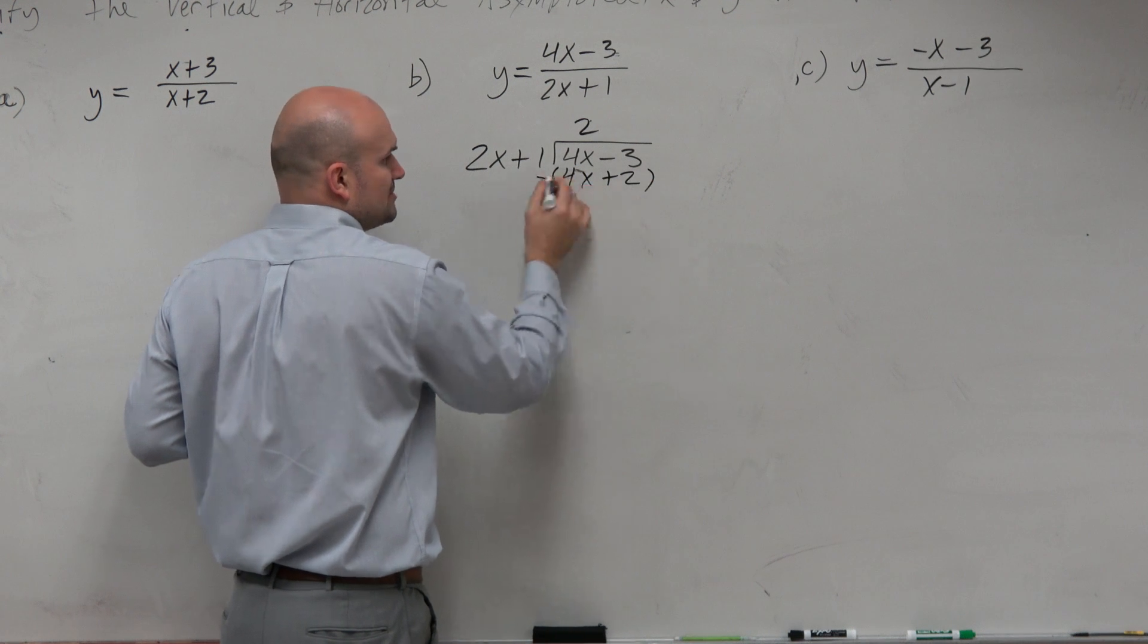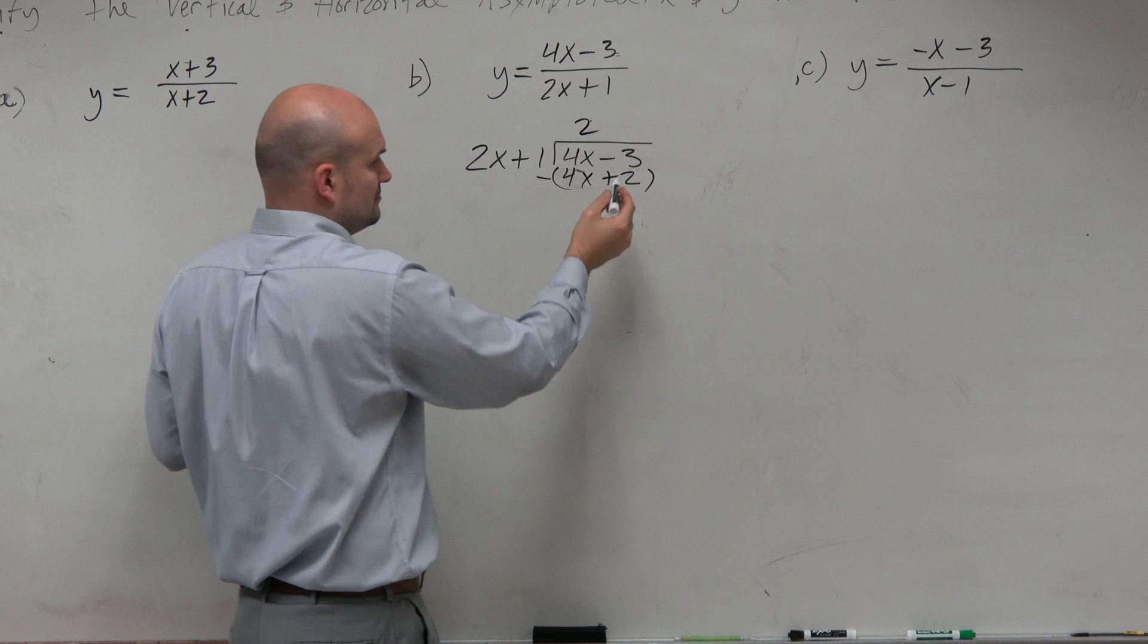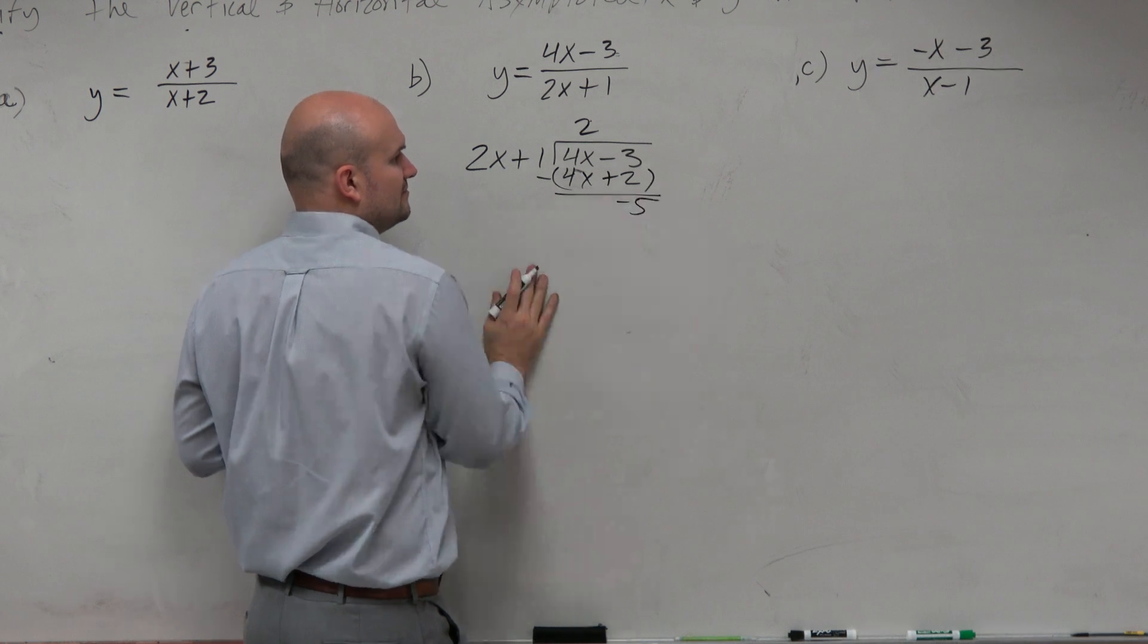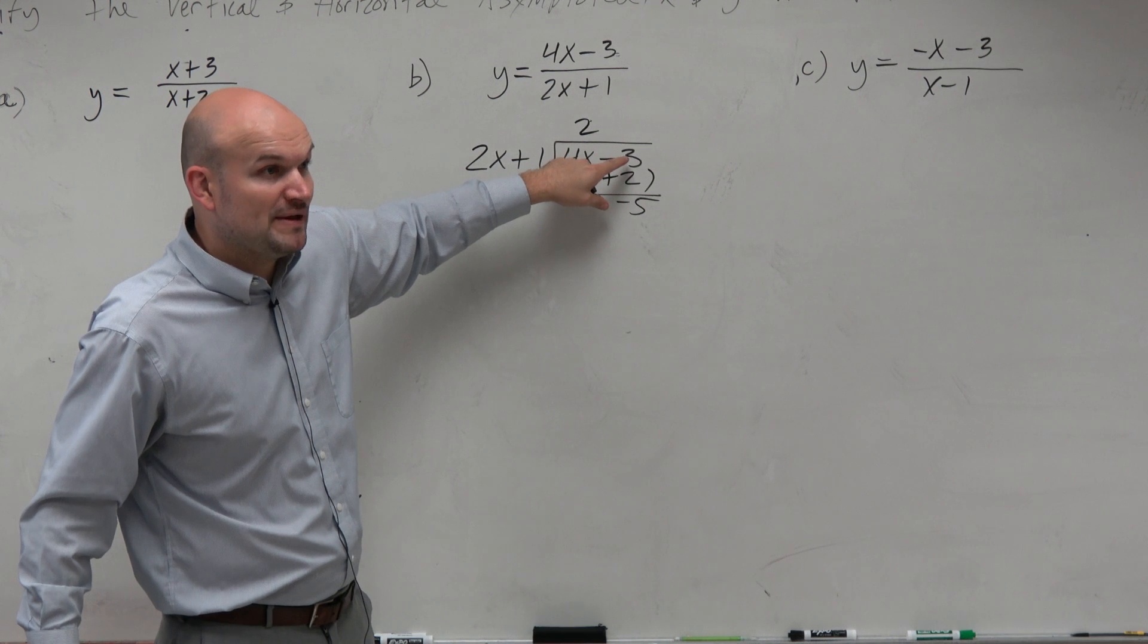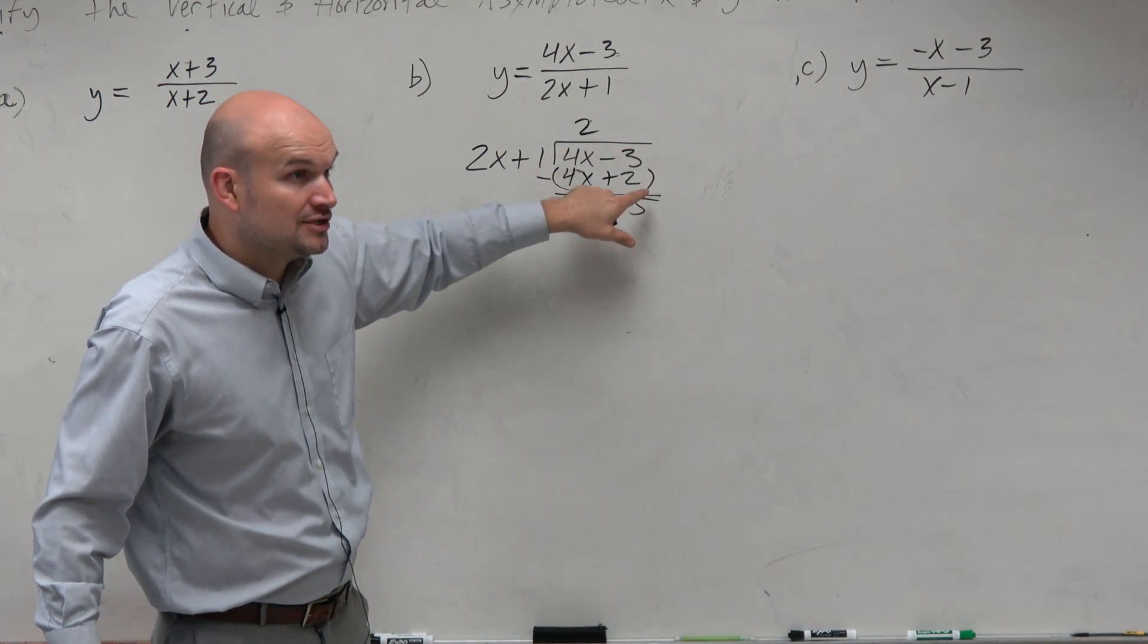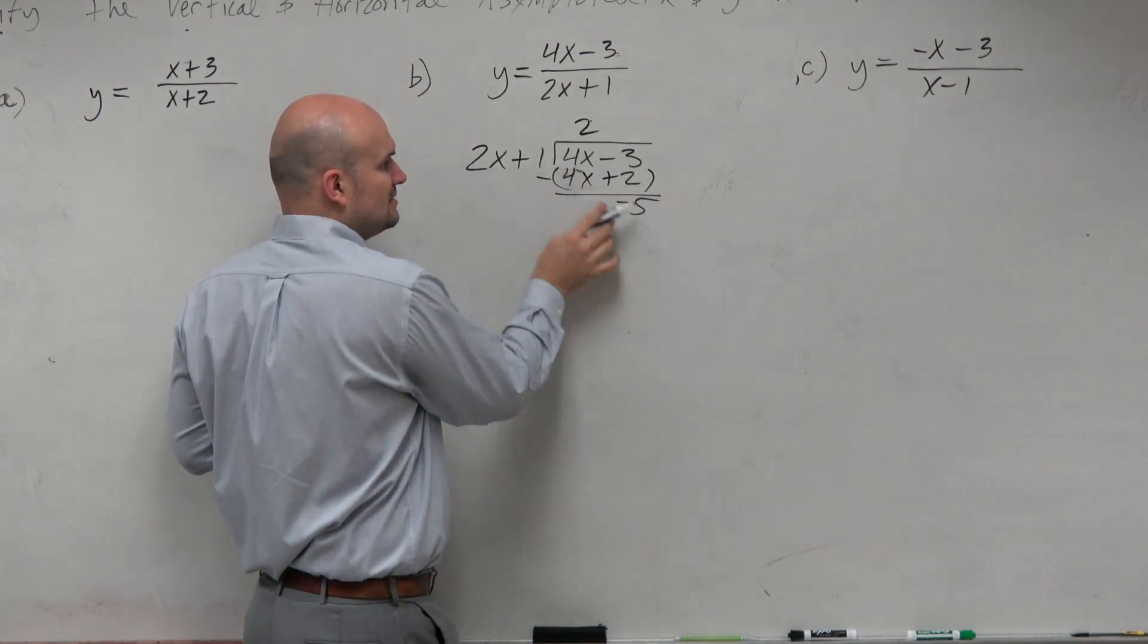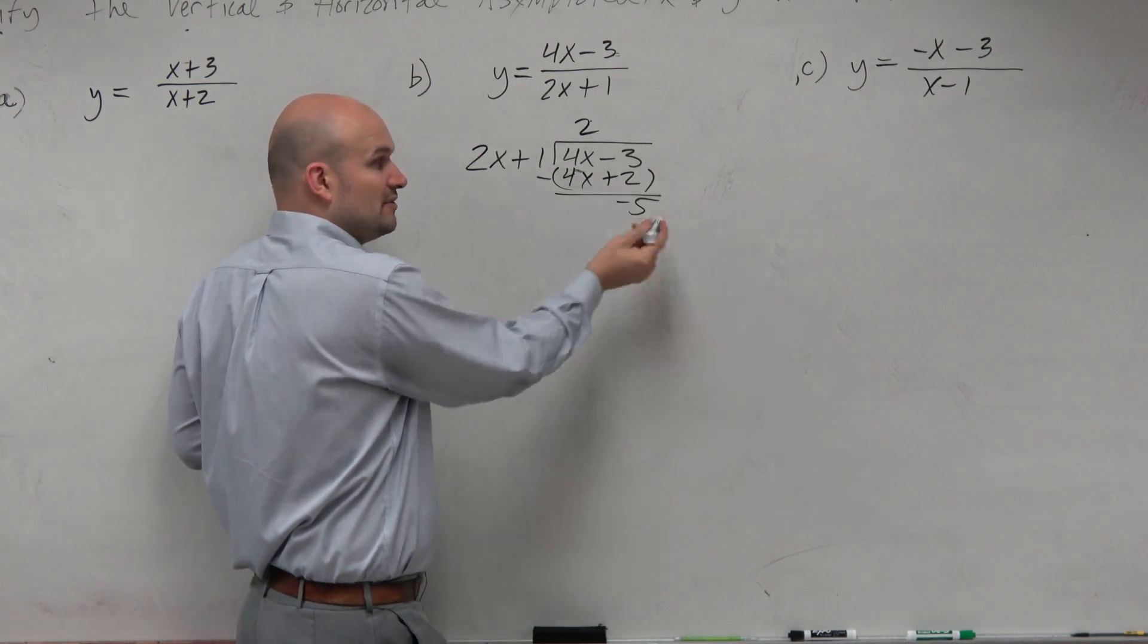Remember to group and subtract. Negative 3 minus 2. Negative 3 minus 2 is going to be a negative 5. You owe me 5. If you owe me $3, right, negative you owe, and you borrow two more dollars, you owe me $5. But does 2x divide into negative 5? No. So therefore, that is our remainder.